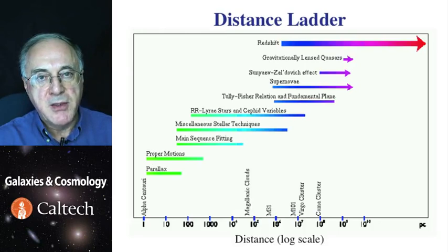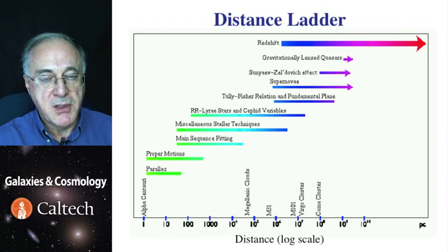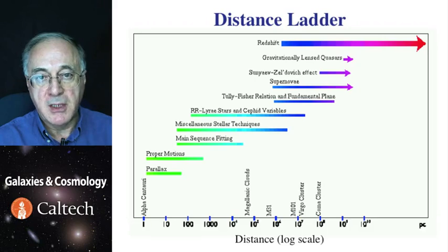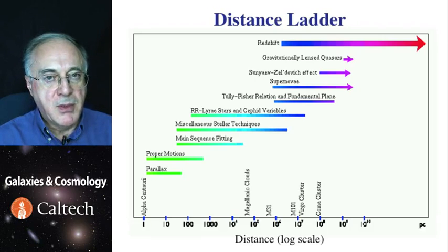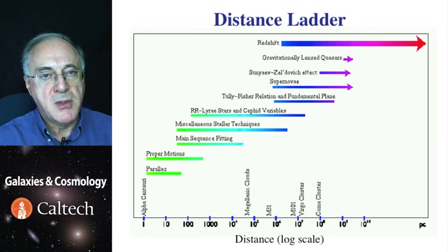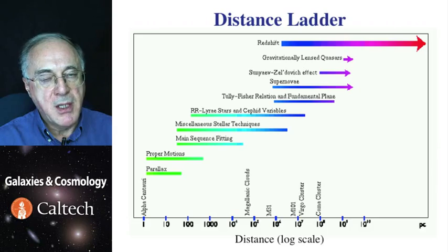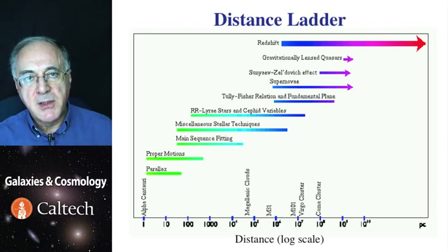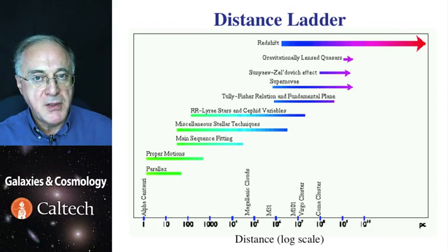Here is schematically what the distance ladder is like. Each method operates in a certain range of plausible distances, and hopefully it overlaps, at least in part, with another method which can then reach deeper — that is the distance ladder. Nearest to us, trigonometric parallaxes and proper motions of stars can be used to measure distances. Then we measure distances to nearby star clusters, and use properties of star clusters to measure distances to even more distant ones, leading to measurement of distances to pulsating stars — Cepheids and so-called RR Lyrae stars — which are a key step in measurements of the Hubble constant.